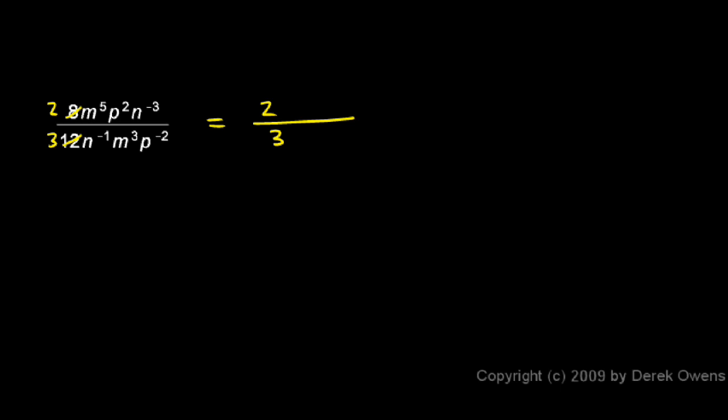Now let's look at the m's. I have an m to the power of 5 here and an m to the power of 3 down there. So I need to subtract. I need to do the top minus the bottom, 5 minus 3. That gives me an m to the power of 2. So I'll put that up here, m to the power of 2. So now the m's are taken care of.